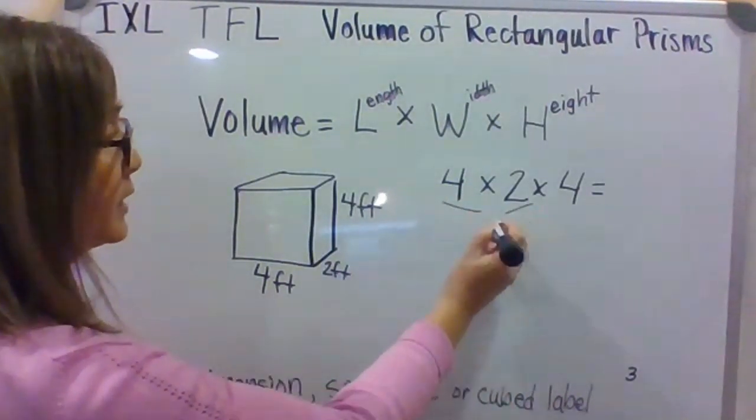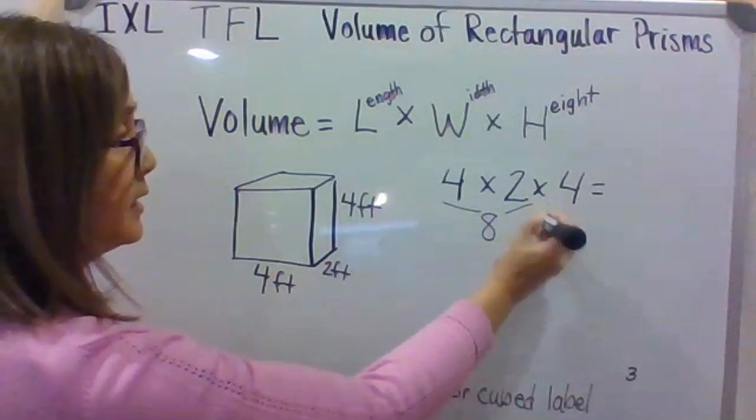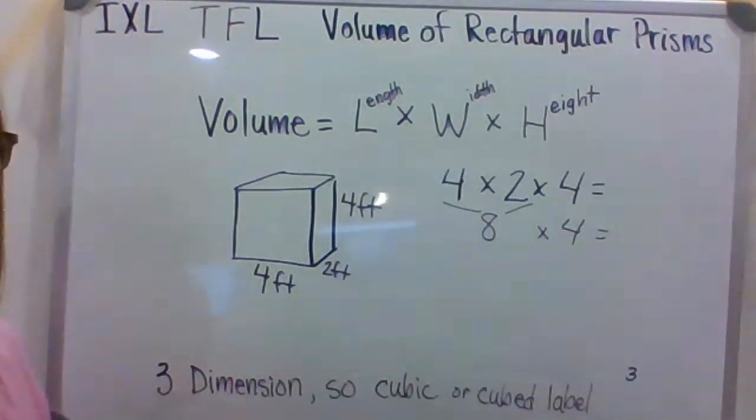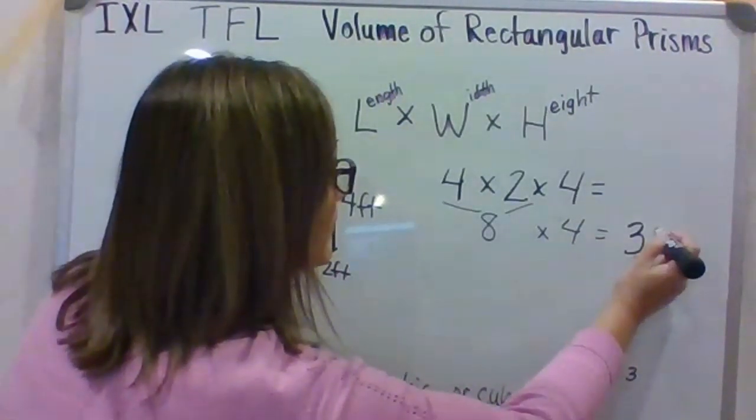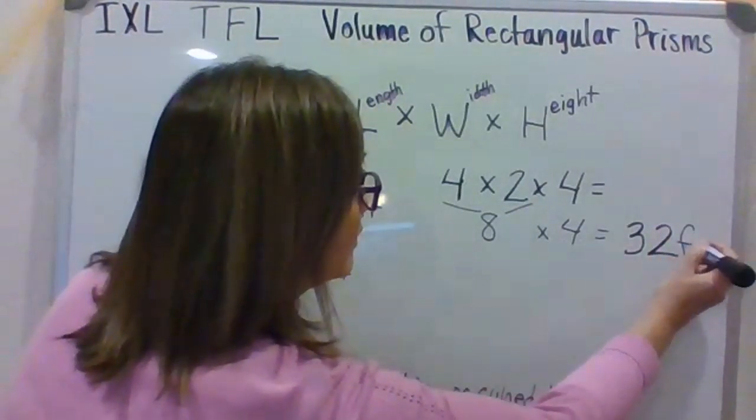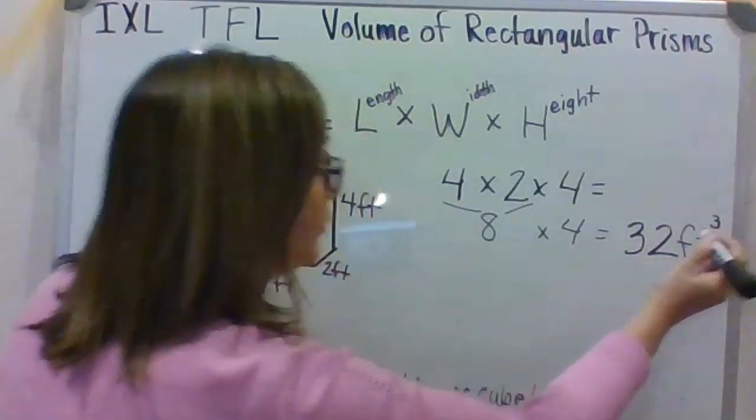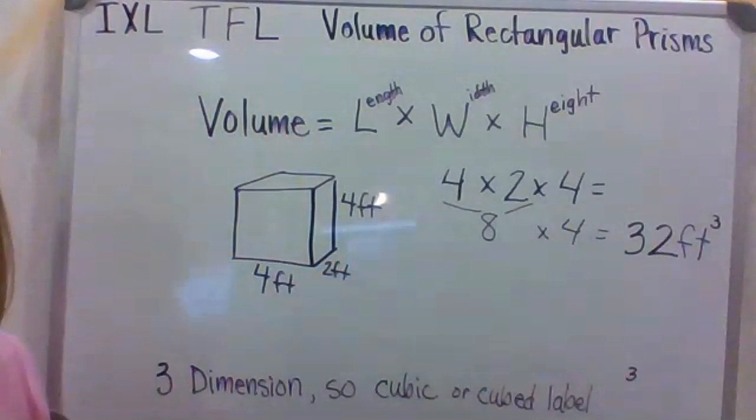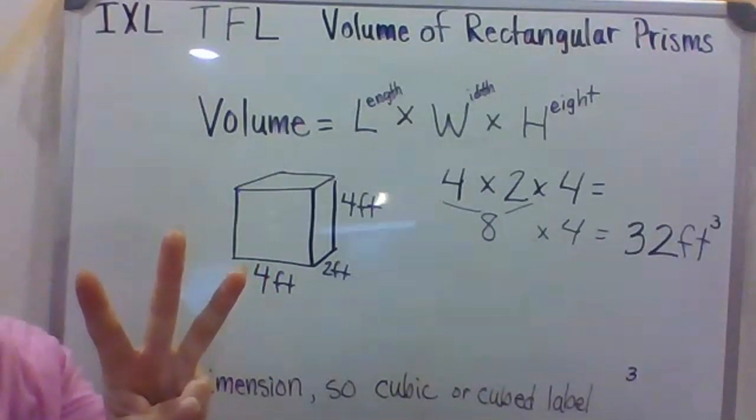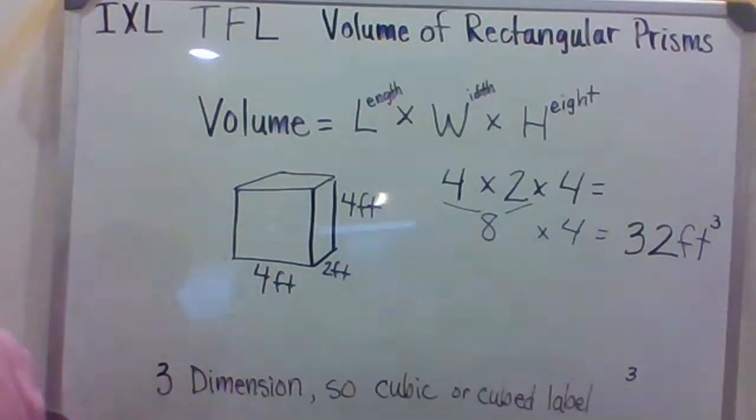So, I'm going to take this 4 times 2 and get 8, and then 8 times that 4 leaves me with 8 times 4. What is it? Come on, basic math facts. That's right, 32. My measurement label is feet, so I need to write my label over here, feet, and put the little 3 there to show that it's been cubed, showing that my answer is reflecting the volume because I measured the length, the width, and the height of that particular prism.